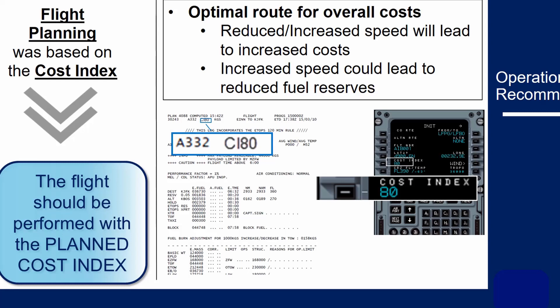If you fly at a different Cost Index and hence different speeds, your actual flight will differ from the flight plan. The flight times, fuel on board and rec max flight levels will deviate from predictions, and this leads to two problems: firstly, a more expensive flight, and also a loss of crew confidence in predictions.